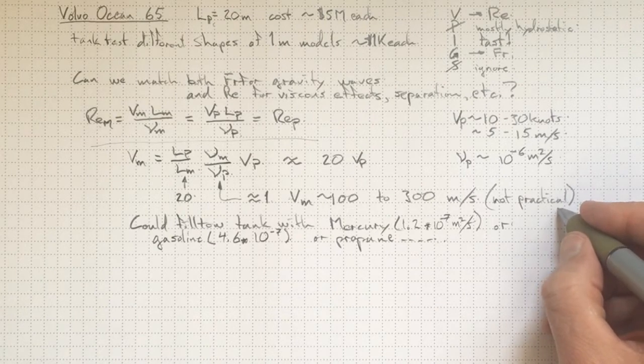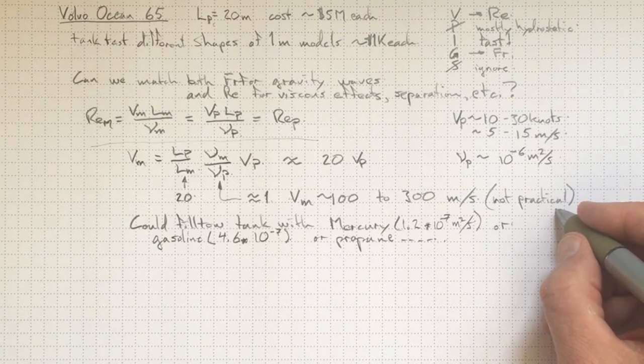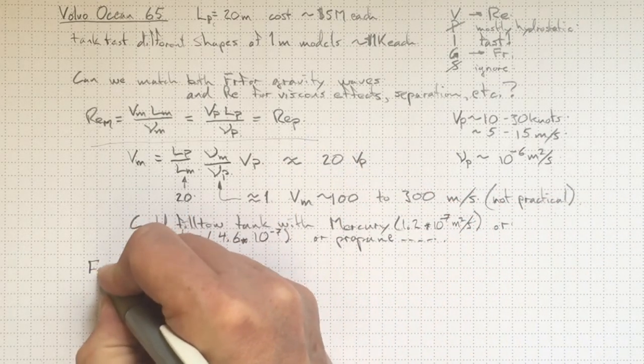So I think it's not going to be practical to get Reynolds number similarity. We're going to have to just settle for the fact that our Reynolds numbers are large and that we will lose some of the effects that are happening in the boundary layer. But maybe we can capture what's going on with the gravity waves if we get the Froude number to be the same.